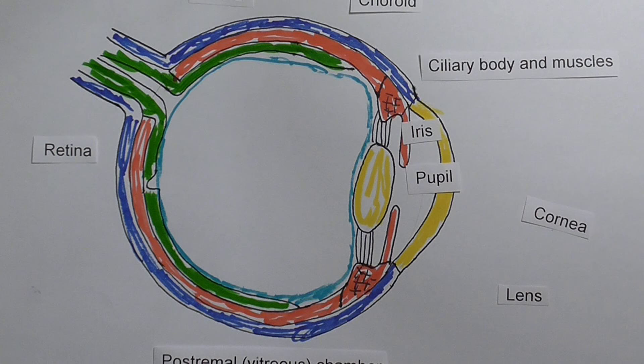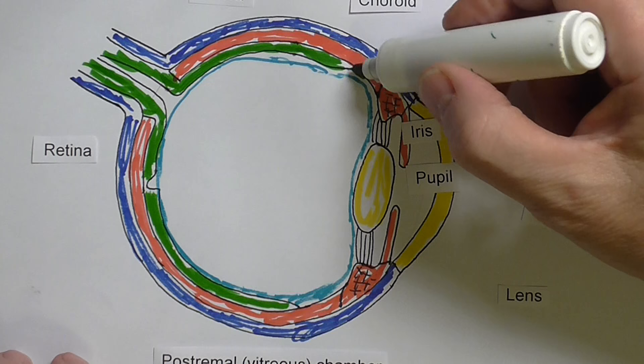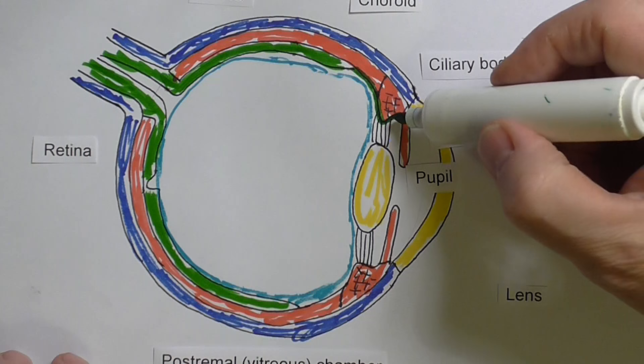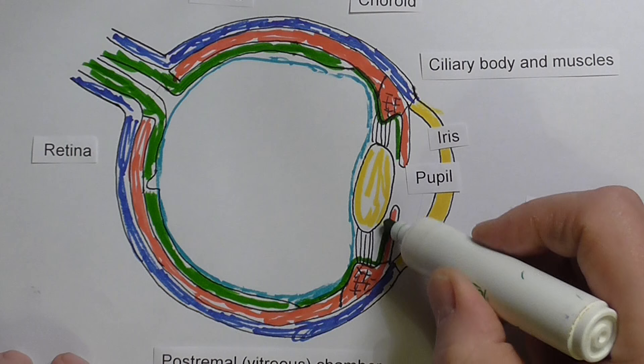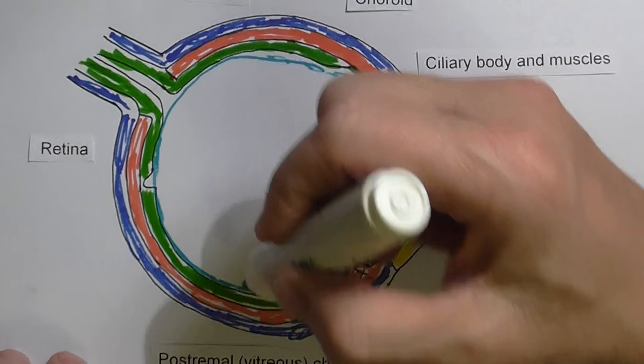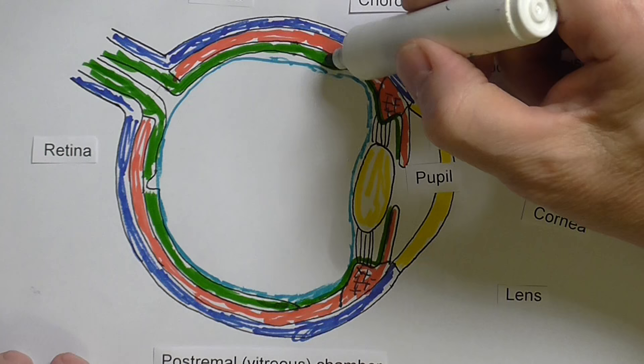The retina actually continues around the ciliary body and the rear surface of the iris. This is the continuation of the retina, but this bit is not photosensitive — this is the non-visual retina. The visual retina goes up to about here where it is light-sensitive, and then it continues on as the non-visual retina around there.